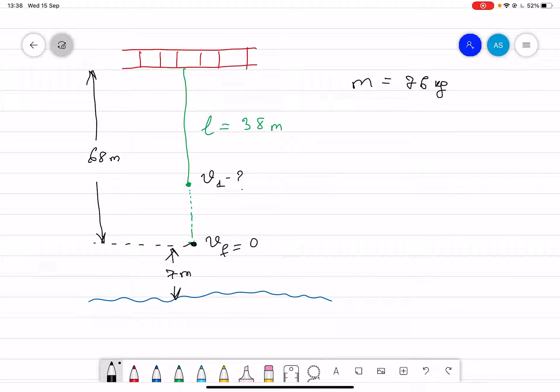What is the magnitude of the impulse exerted on the bungee jumper while the cord stretches? So basically when the bungee jumper jumps up to here, up to here...